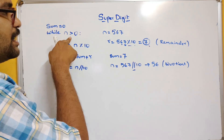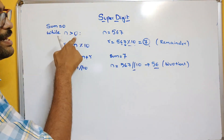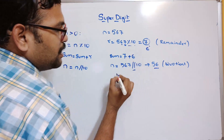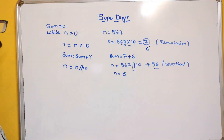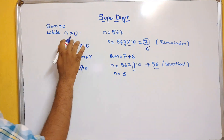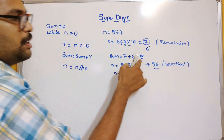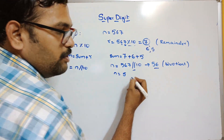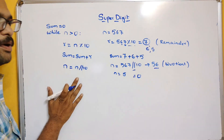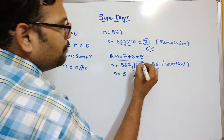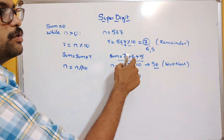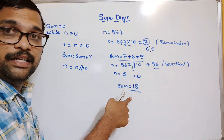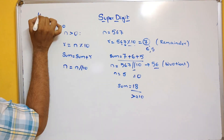Now n is 56 — greater than 0, so the next remainder is 6; sum becomes 7 plus 6. Then n becomes 5, remainder is 5; sum becomes 7 plus 6 plus 5 equals 18. Then 5 floor-divided by 10 is 0, so the loop stops. The sum is 18 — it is a double digit, meaning greater than or equal to 10, so we need to repeat.